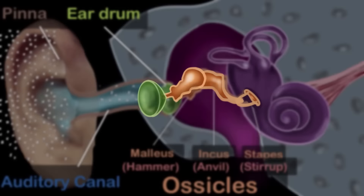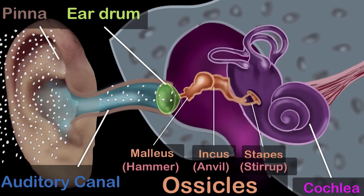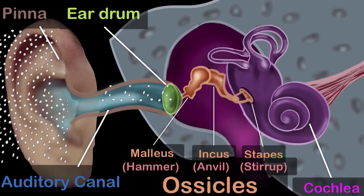That brings us to the inner ear. The inner ear consists of a bony structure, shown in purple. The top part has three semi-circular rings which help us maintain our balance — so they're not involved in hearing. The part involved in hearing is this snail-like structure called the cochlea. Although the bones have already started transmitting vibrations, nothing gets heard until these vibrations are converted to electricity and sent to our brain — and that's exactly what the cochlea does.